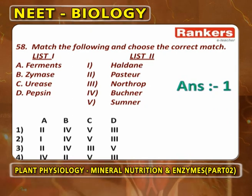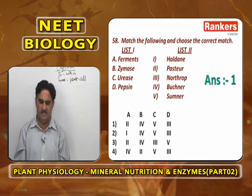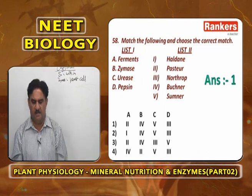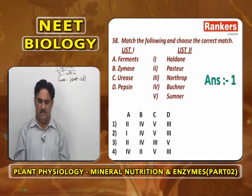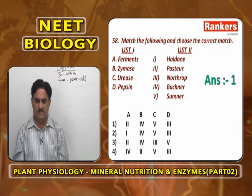Match the following: Ferments — Pasteur; Zymase — Buchner; Urease — Sumner; Pepsin — Northrop; Haldane. Ferments are special chemicals present in yeast cells controlling fermentation, discovered by Louis Pasteur. The term Zymase was coined by Buchner. Urease was obtained in pure crystalline form from Jack bean plants by J.B. Sumner.